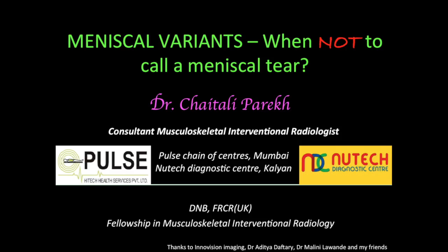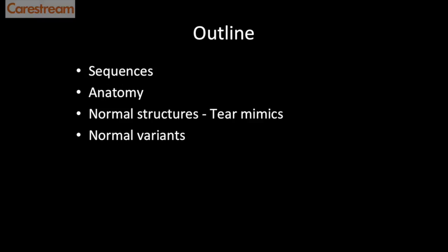Today we'll be discussing meniscal variants — that is, when not to call a meniscal tear. We won't be concentrating on sequences, and as far as anatomy goes we'll only discuss meniscal anatomy. For those interested in sequences and MRI knee joint anatomy in detail, you can go to the MRI knee joint anatomy video on the Indian Radiologist YouTube channel. After that we'll discuss normal structures that look like a tear — that is, tear mimics — and finally we'll look at normal meniscal variants.